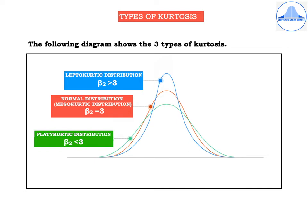Then we have the normal distribution or the mesocurtic distribution, shown in orange. For such a distribution, β2 will be equal to 3 — a curve which is neither too peaked nor too flat. The third curve, shown in green, represents the platycurtic distribution, for which β2 is less than 3, meaning it is less peaked than the normal.